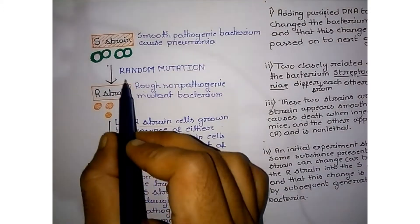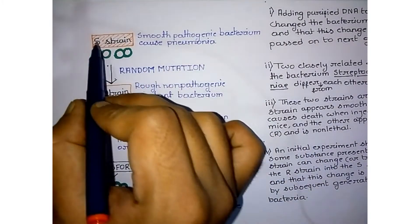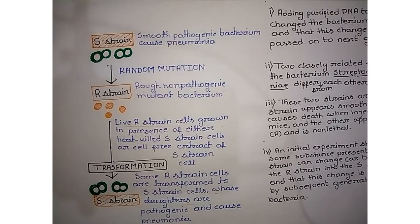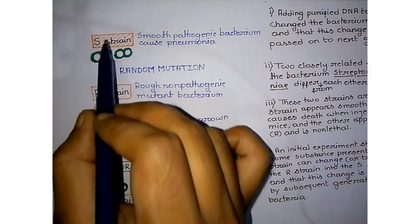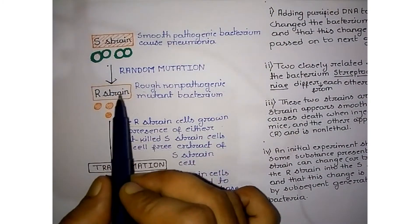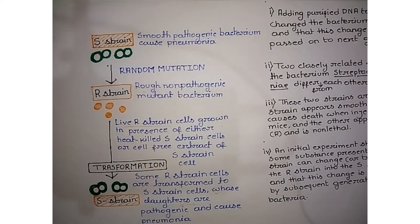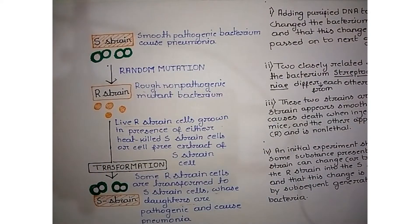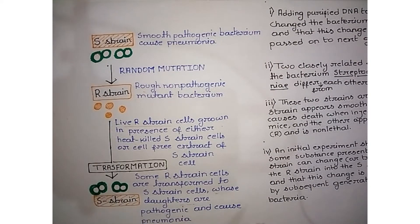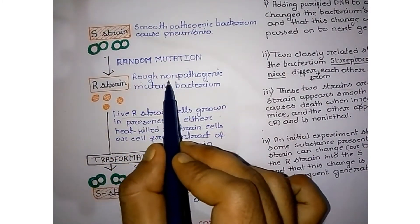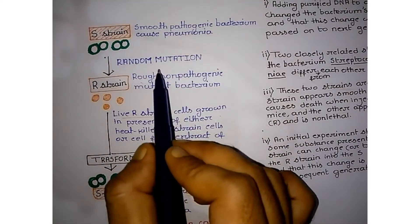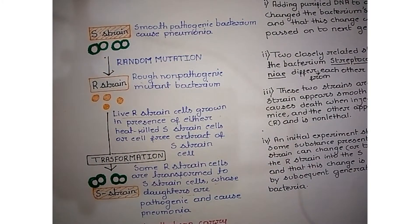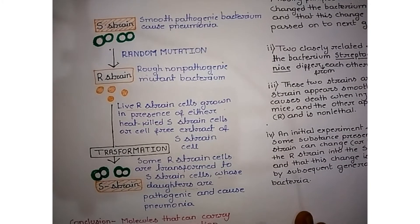It is important to remember that R-strain is formed by random mutations of S-strain. S-strain is the smooth, pathogenic bacterium that causes pneumonia. Random mutation leads to transformation of S-strain into R-strain, a rough, non-pathogenic mutant bacterium. Therefore, R-strain is not lethal.